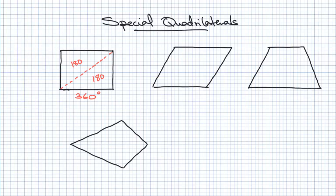Now this is where we get into our special quadrilaterals. Here we have a parallelogram. It wouldn't look like that yet because I haven't put the arrows in. Double arrows tell you that these two sides are supposed to be parallel, and these two are parallel. What's special about the angles inside a parallelogram is that the opposite angles are the same.